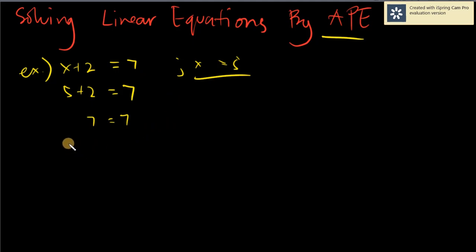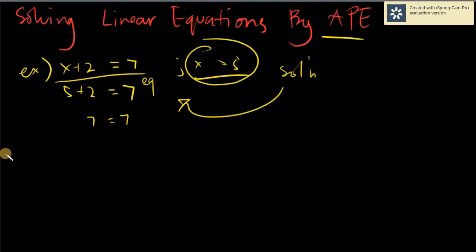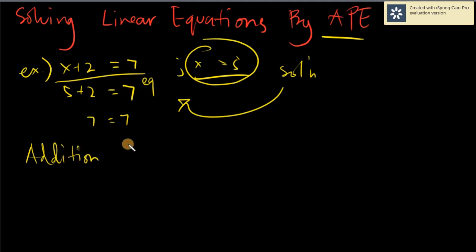Now, what is the actual proper way of solving for this one? Because this is the solution that will satisfy your given equation. And how do we solve for the solution? We do that by APE. APE by definition is simply called the Addition Property of Equality.